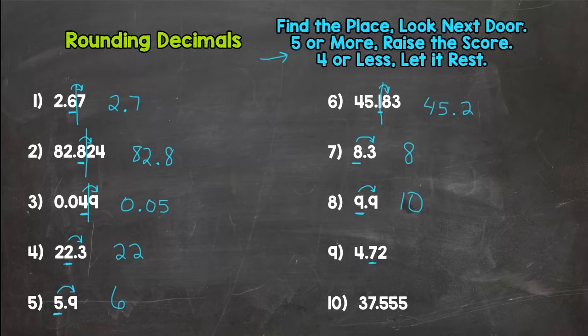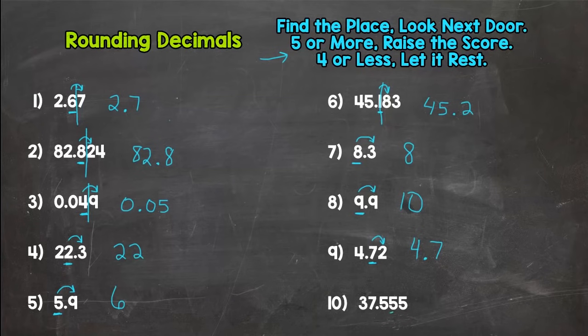For number nine, let's round to the tenths place. Look next door — the two says stay the same, so you would round to four and seven tenths.